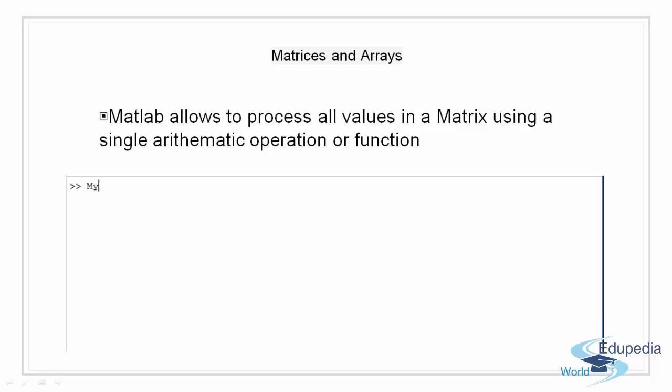MATLAB allows us to process all the values in the matrix using a single arithmetic operation or a function. If we want to add something to all the elements we can simply use an add operation. If we want to subtract something from all the elements we can use the subtraction operation. We can even multiply something to all the elements, like for example multiplying by 2.